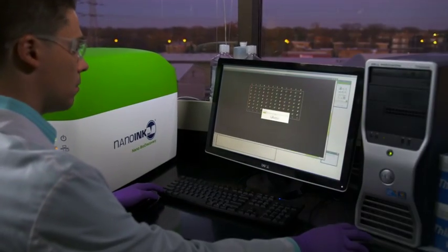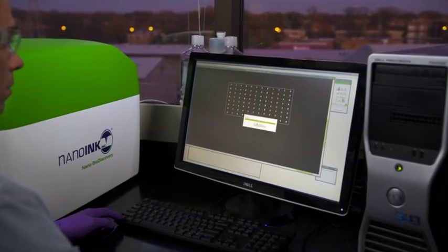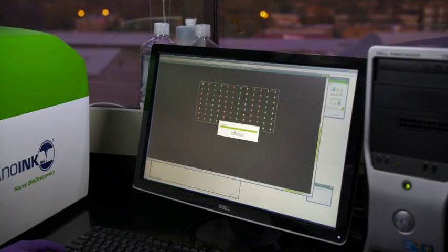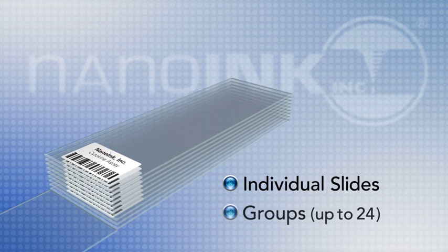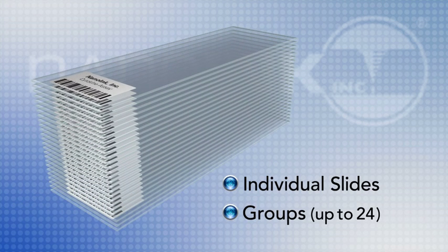The NanoScan 900 runs on intuitive and user-friendly software. Users can define scanning and analysis parameters for an individual nanoarray slide or for an entire group of slides.